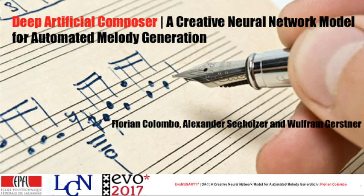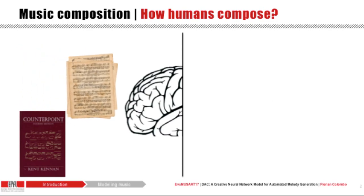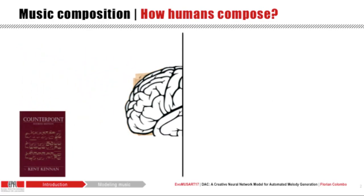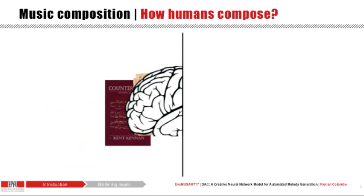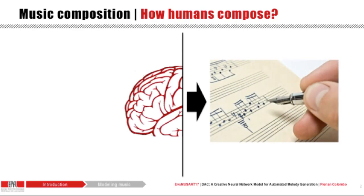The Deep Artificial Composer: a creative neural network model for the automated melody generation. This talk is about automated music composition. As an introduction, let us take a simplified viewpoint on how humans turn into composers. An untrained human might read, play and analyze music scores, take composition classes, and learn music theory, eventually developing a knowledge that allows them to compose new pieces of music.